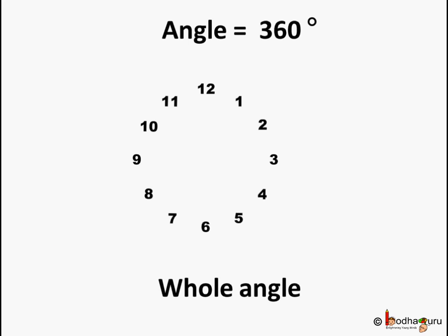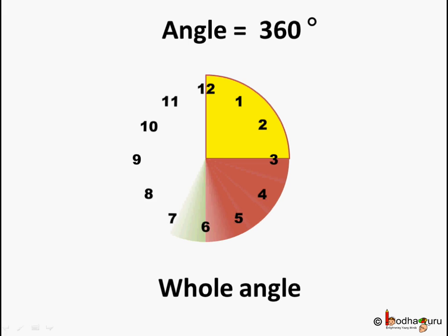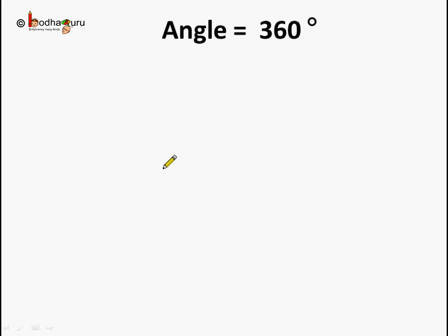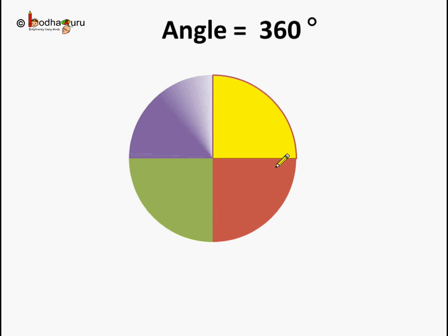Now there is a special angle which is called the whole angle. What is this whole angle? If we see the clock, the whole angle is equal to 360 degrees, which is equal to a complete round. So the whole angle is equal to 360 degrees. Not just the clock — all circles have 360 degrees. It is taking a complete round, so the angle here is equal to 360 degrees, and hence it is a whole angle.